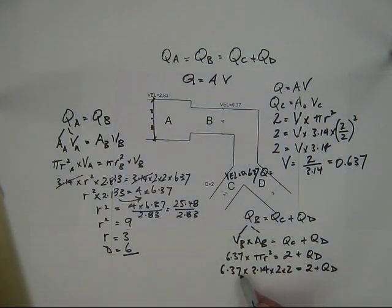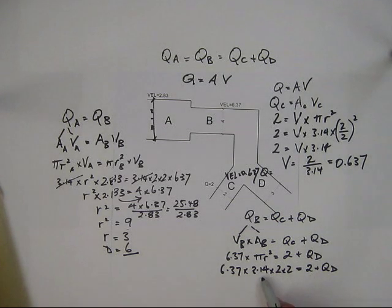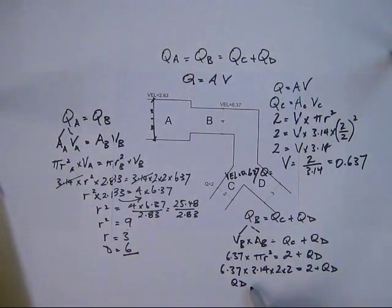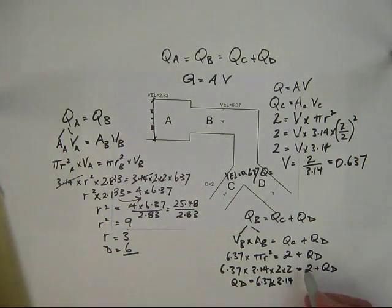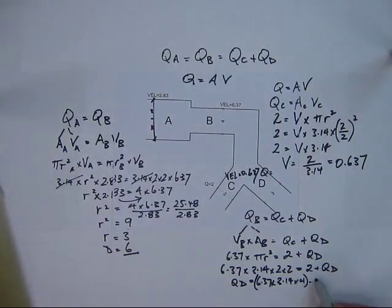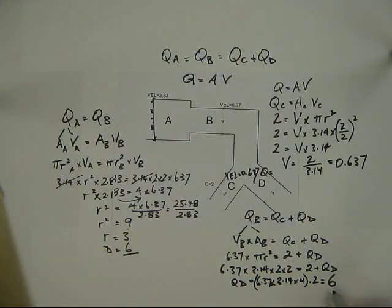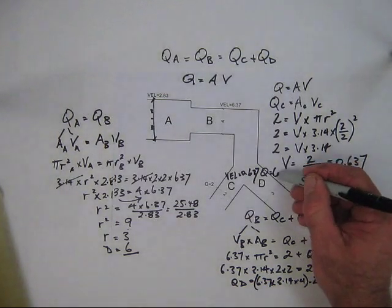Transposing the 2, since it's positive on the right it becomes negative on the left. Working out that calculation: the flow rate at D equals 6.37 times 3.14 times 4, minus 2, which equals 6. So the flow rate at D equals 6.